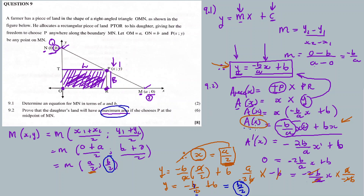By finding the first derivative and calculating x, we get x = A/2. Therefore substituting A/2 back into the original equation gives y = B/2. So (A/2, B/2) are the coordinates of the midpoint, and that completes question 9.